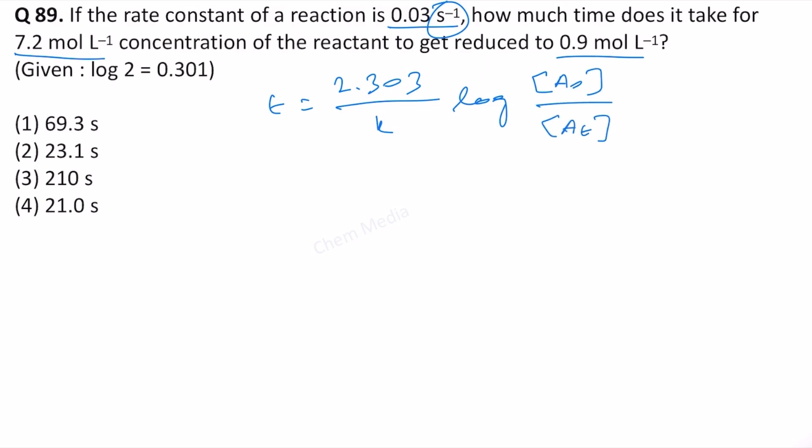A₀ is the initial concentration and Aₜ is the concentration at time T. Therefore, T equals 2.303 divided by K, log of initial concentration 7.2 molar over concentration at time T which is 0.9 molar. 9 times 8 is 72.